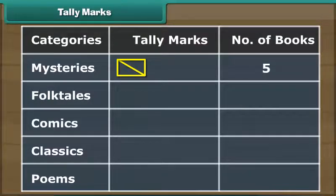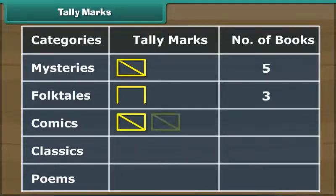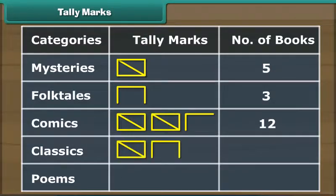Represent the fifth mystery book with a line drawn between two opposite ends of the rectangle. We repeat the exercise for other categories of books. The end result is a tally marks table.